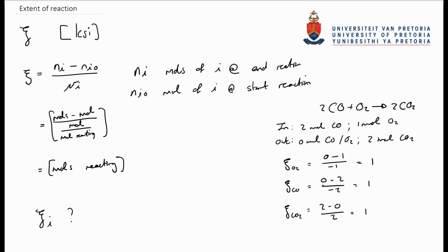This implies that the extent of reaction for all the species in a chemical reaction is exactly the same, whether I refer to the reagents or the products. It should also now become clear why we have defined the stoichiometric coefficient as being negative for reagents and positive for products.